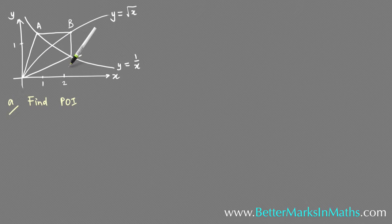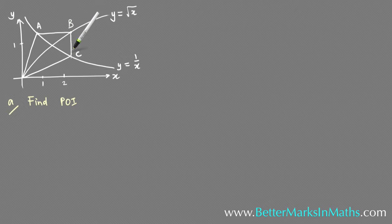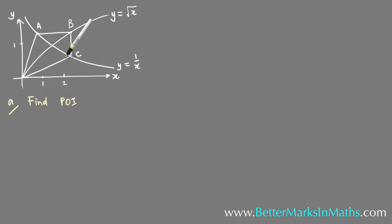In this question there's a graph of y equals the square root of x and y equals 1 on x. There's a quadrilateral formed by joining a horizontal line from A to B, then a vertical one down from B to C. C is on one curve, B is on the other curve, A is on the other curve, and they connect to the origin. Part A asks you to find the point of intersection of the two curves.